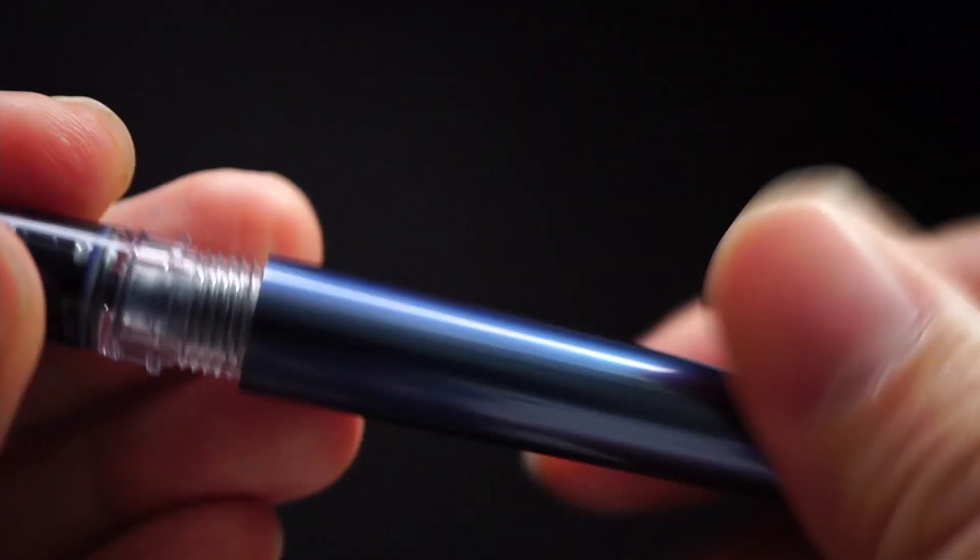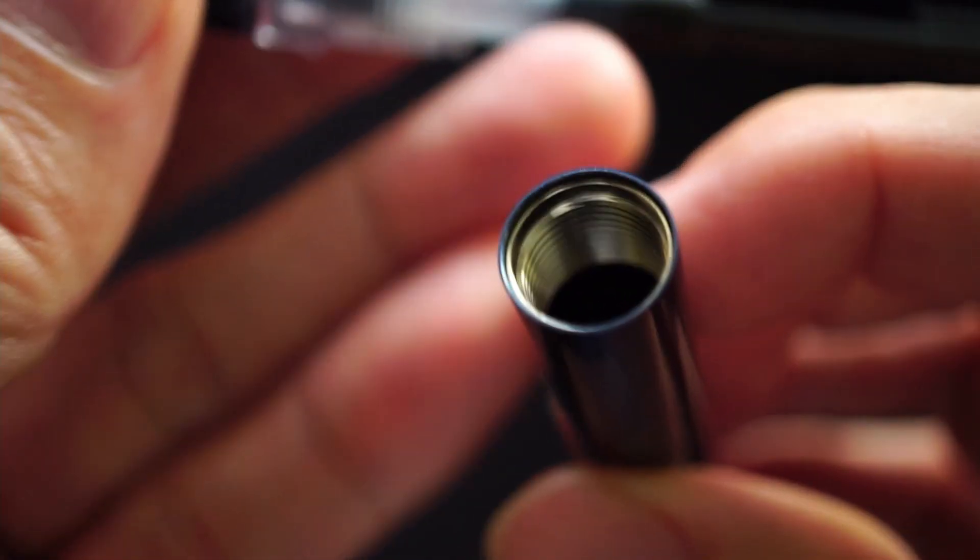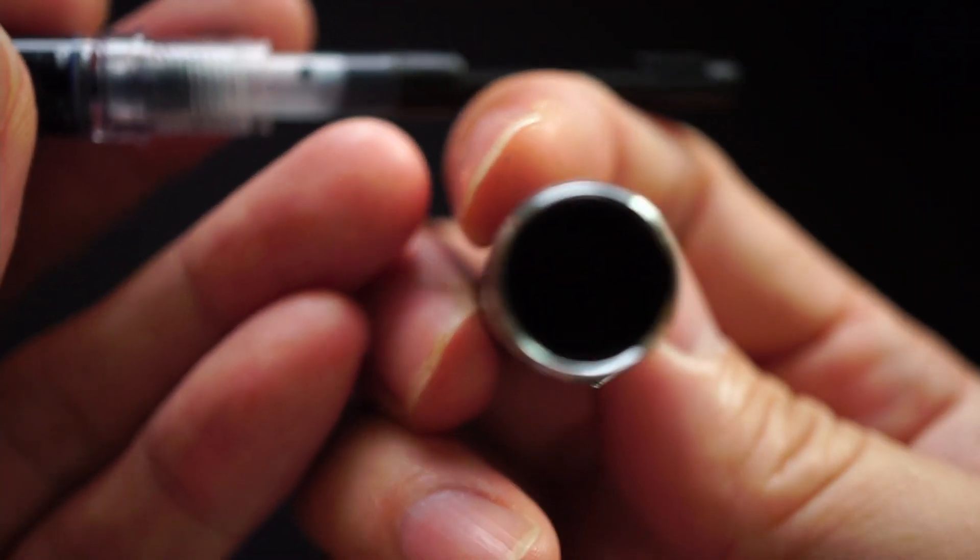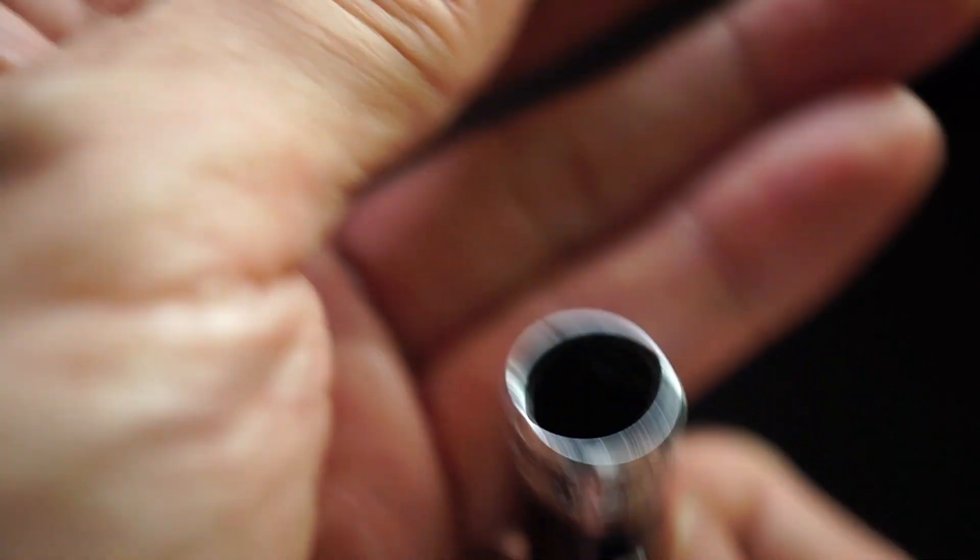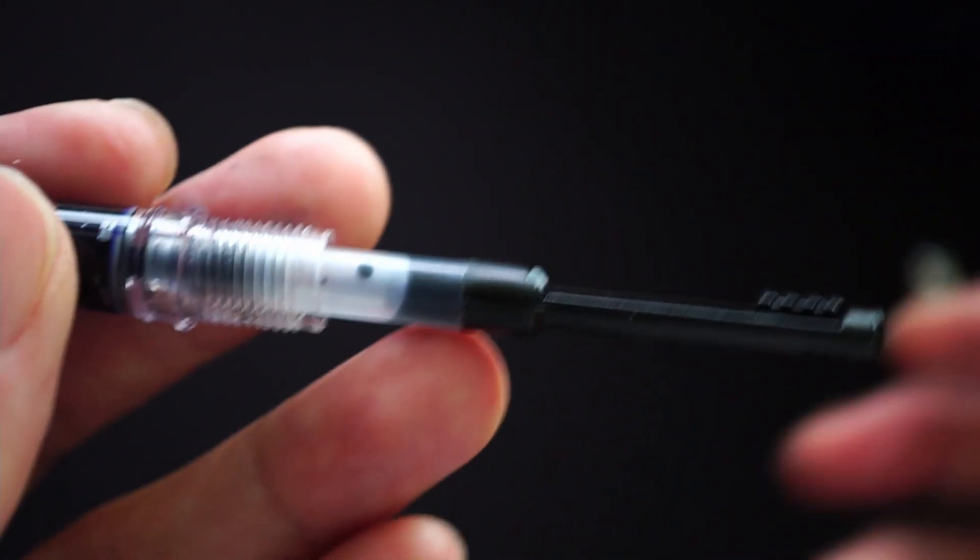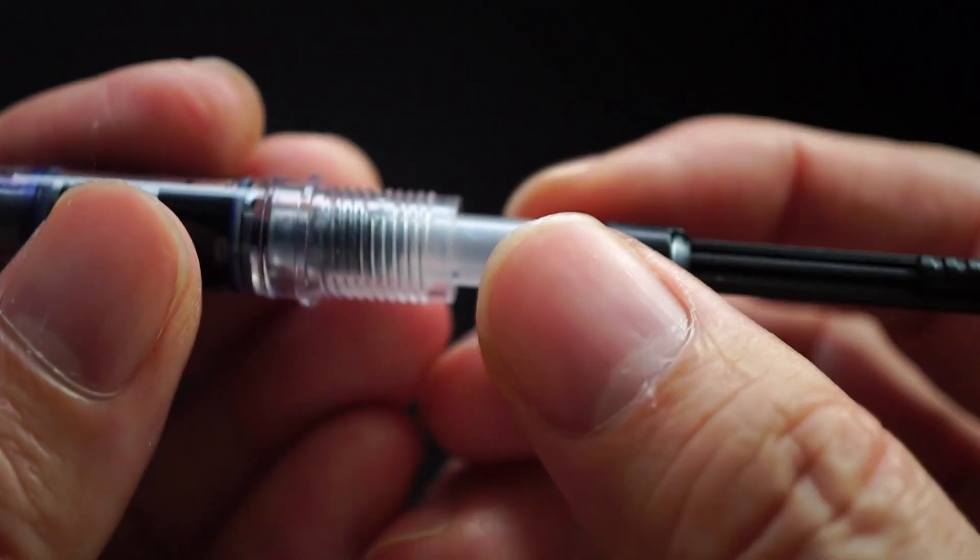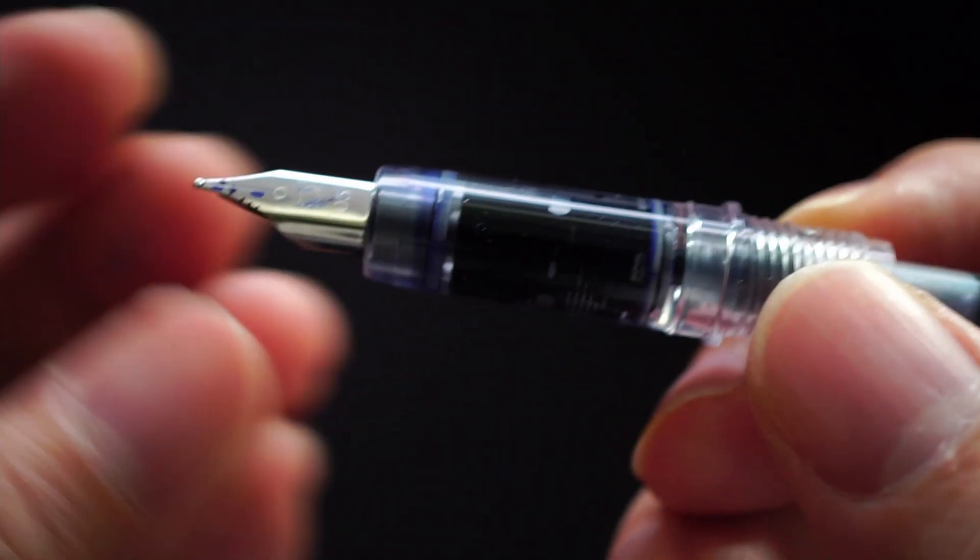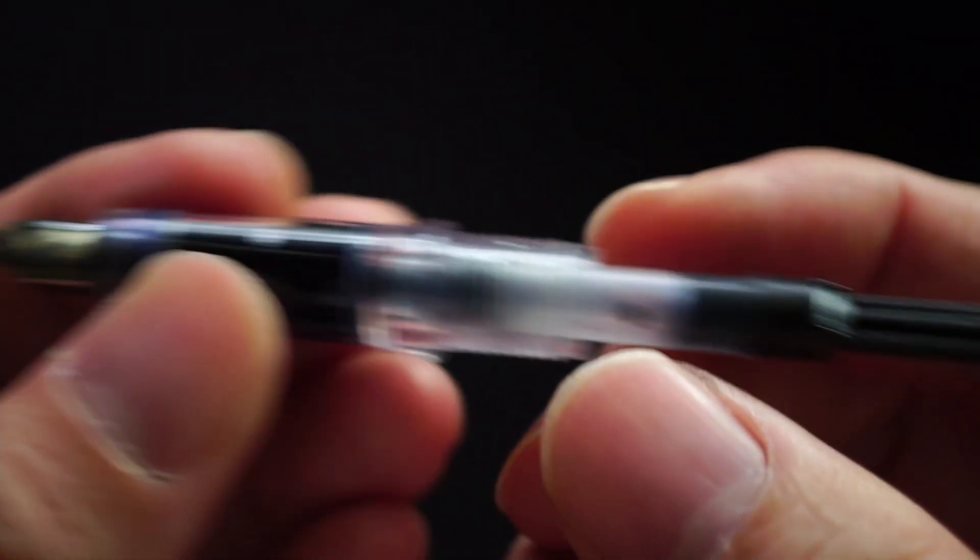Looking at the rest of the pen, the barrel isn't anything special. It is obviously threaded and it's metal threads. One other thing about this pen, which is also the case with all the other Platinum pens, it actually has the Slip and Seal mechanism to keep the ink moist and not let the nib dry out.